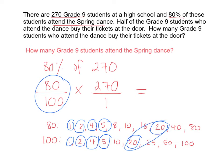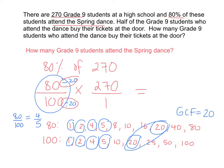20 would be the greatest common factor. That means that 80 and 100 are both divisible by 20. So when I take 80 and divide it by 20, that gives us 4. And 100 divided by 20 is equal to 5. So 80 out of 100 is equivalent to 4 over 5. Because I divided the numerator and the denominator by the same number, I've come up with an equivalent fraction.